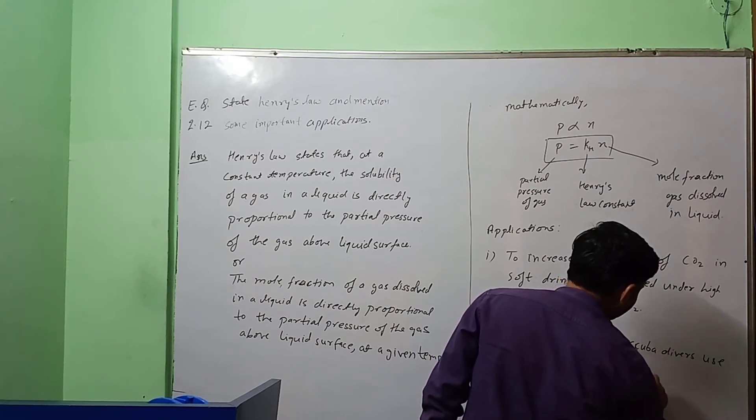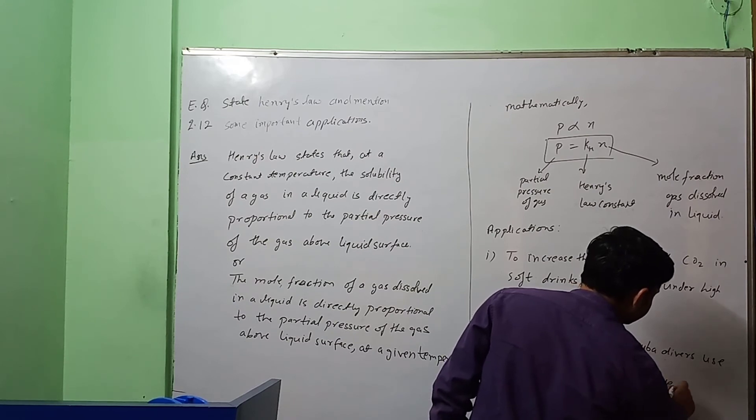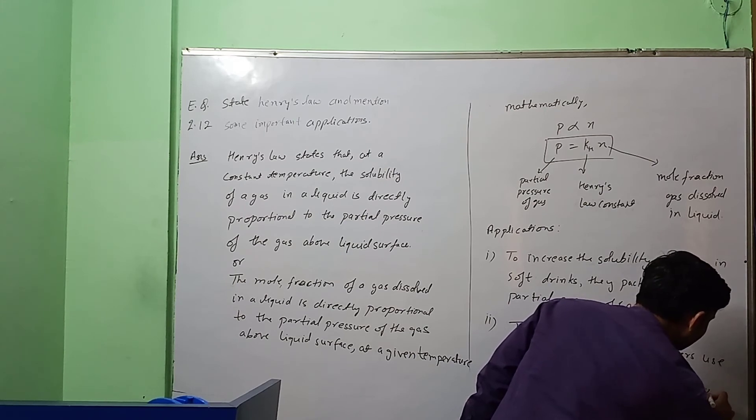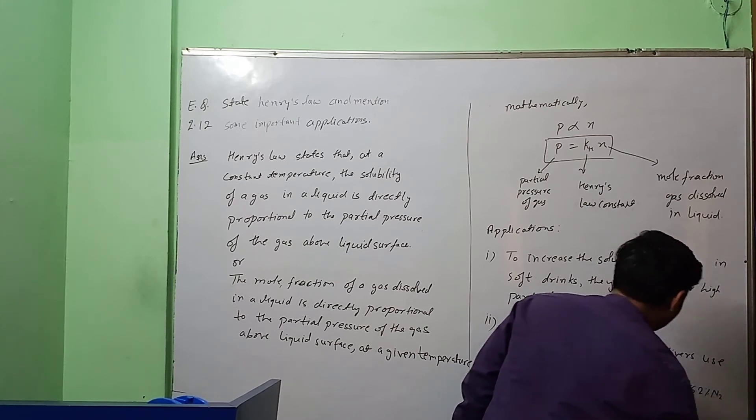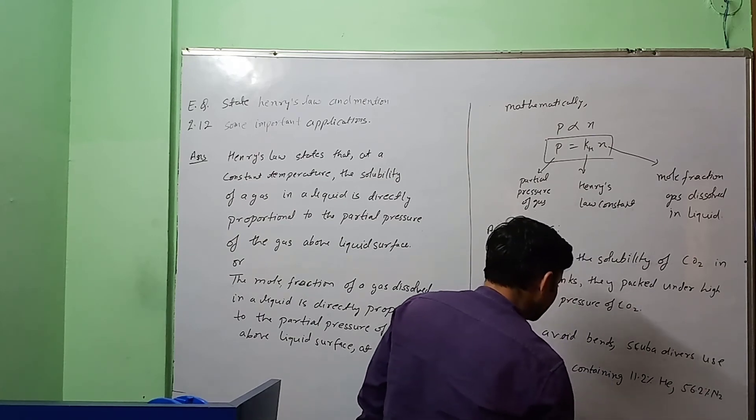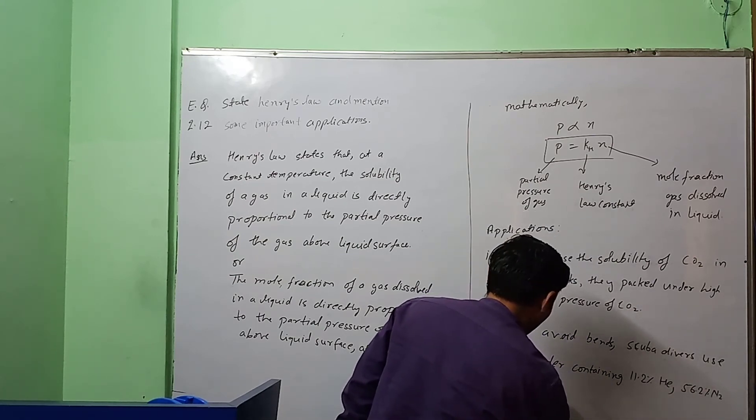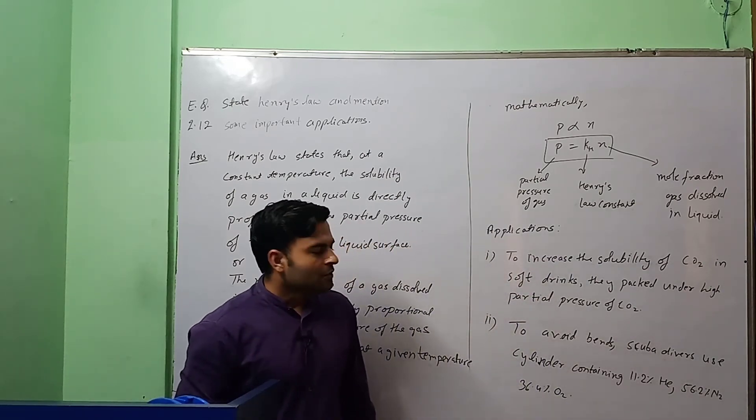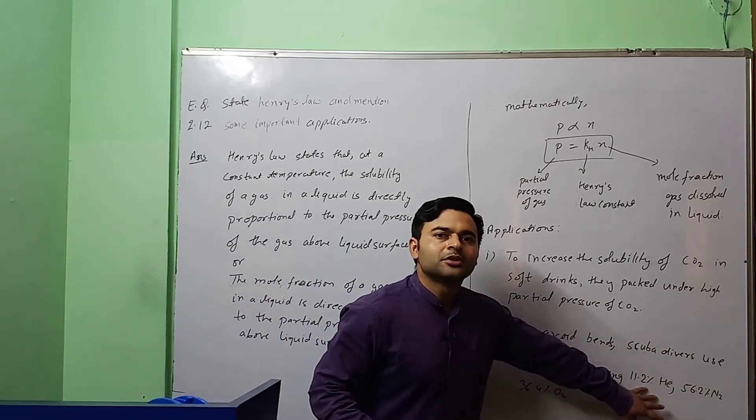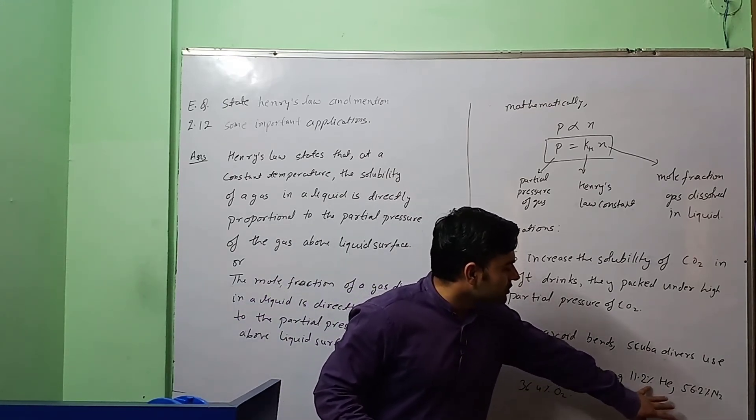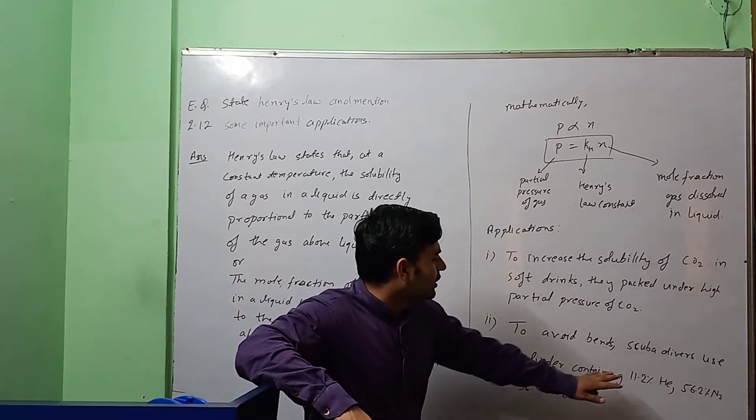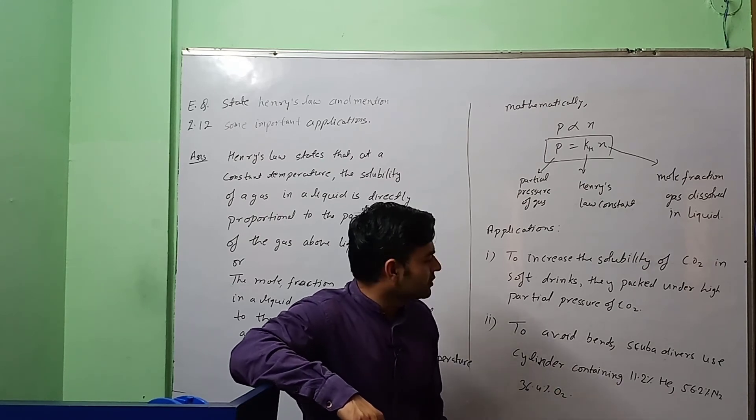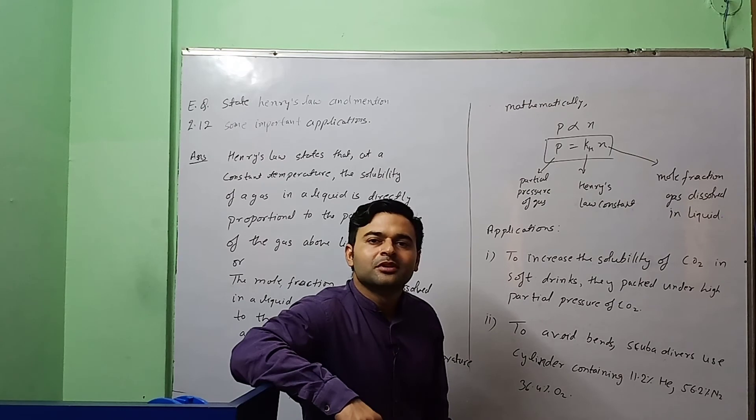11.2% helium, 56.2% nitrogen, and 36.4% oxygen. And now the helium is less soluble so it will not dissolve with the blood, and the partial pressure of nitrogen and oxygen is reduced so the bends will be avoided.